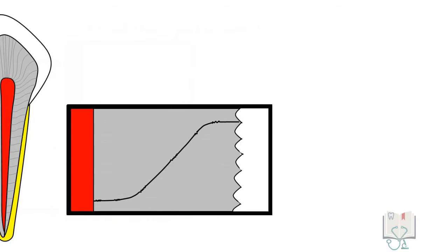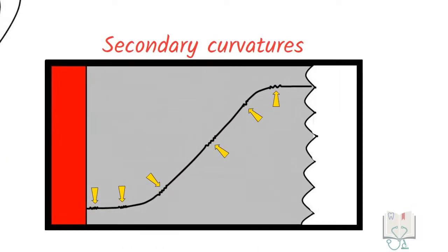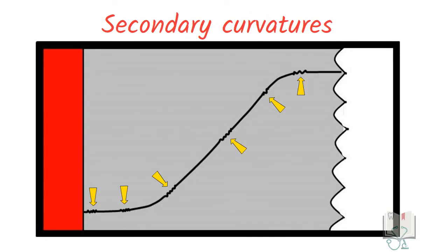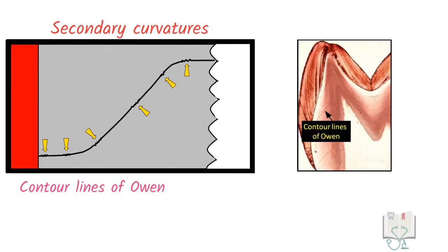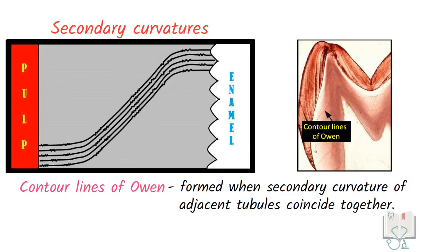Apart from the two primary curvatures, minute curvatures are present all along the course of the dentineal tubules called secondary curvatures which can be well appreciated at higher magnification. Contour lines of Owen are lines formed when secondary curvature of adjacent tubules coincide together.